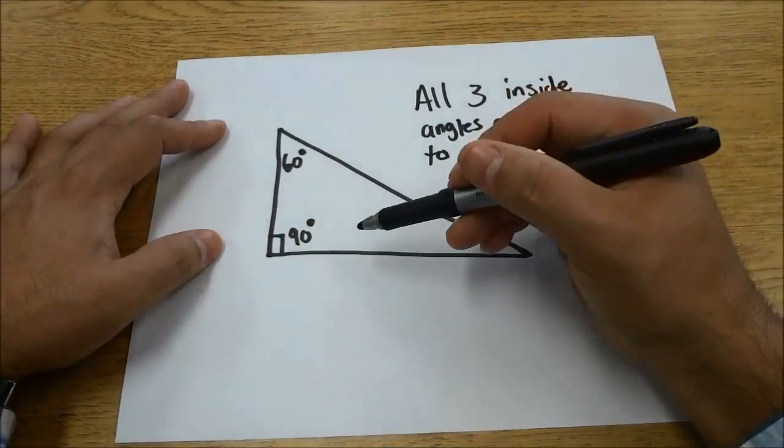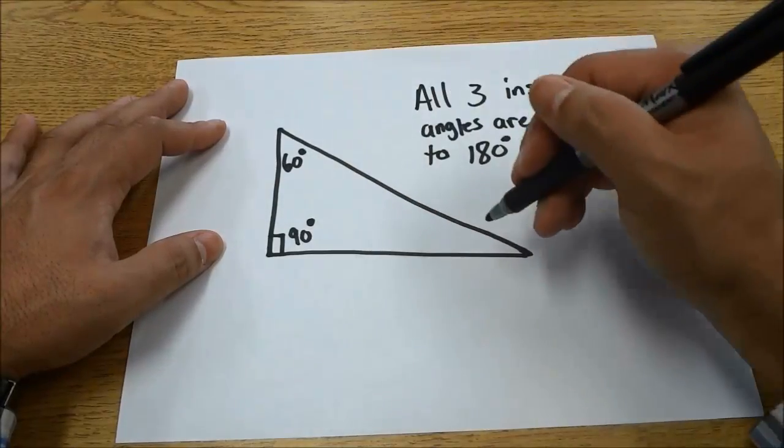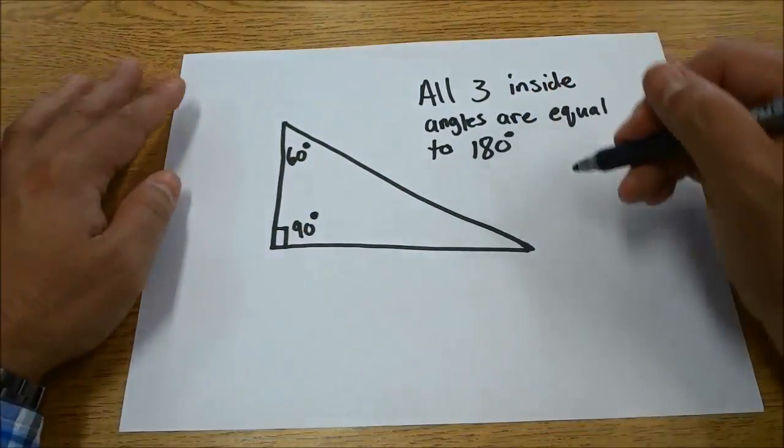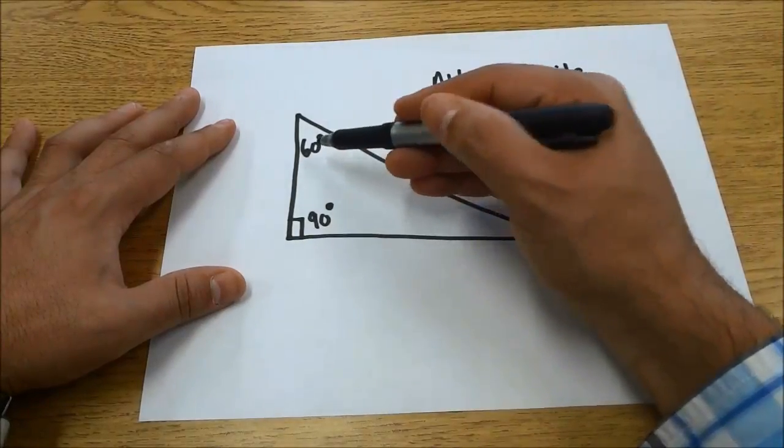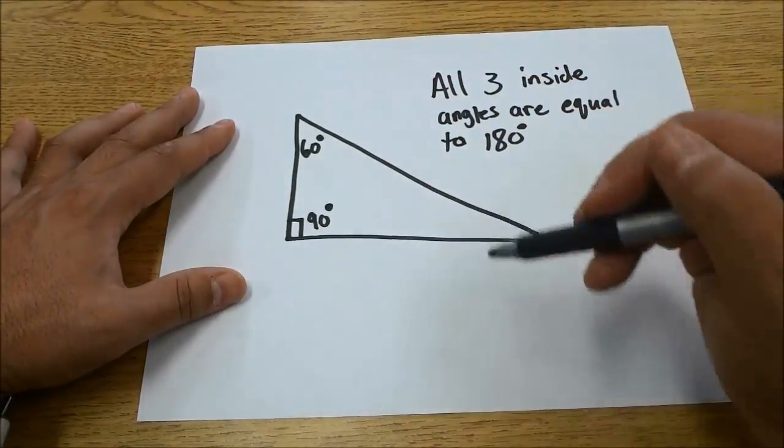With that being said, we know that 90 degrees plus 60 degrees plus this unknown angle equals 180. So what we're going to do is add 90 degrees and 60 degrees and subtract that total from 180.